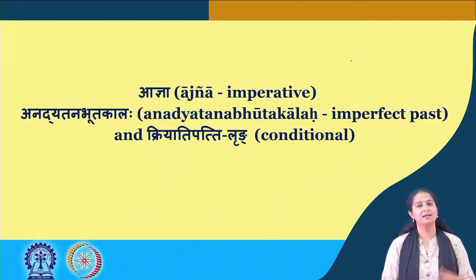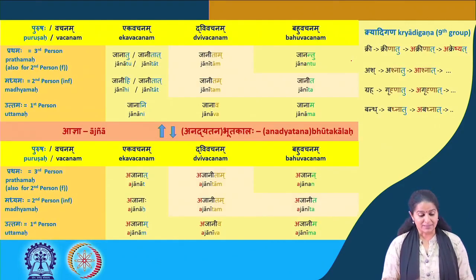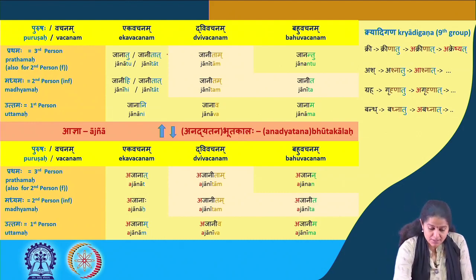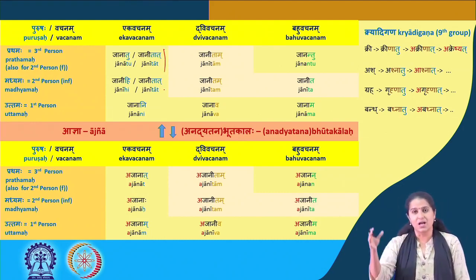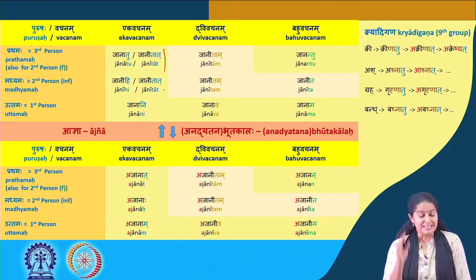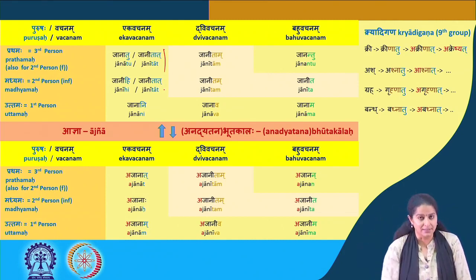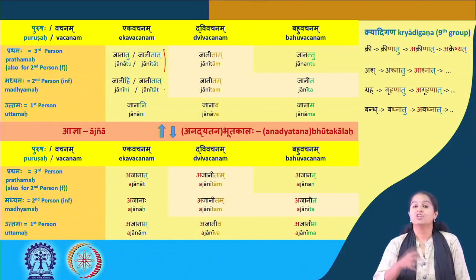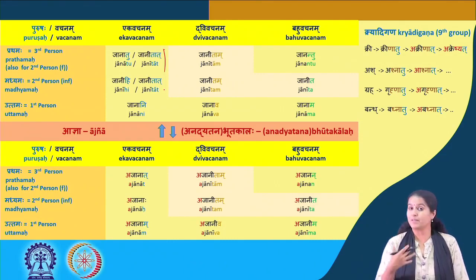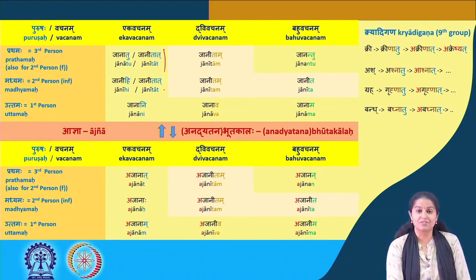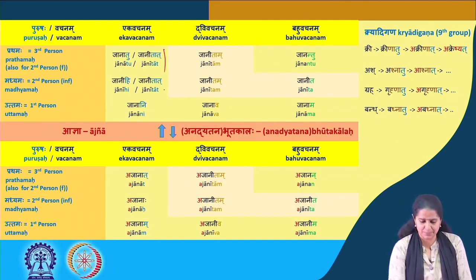Now we have the ajnya (imperative), the anadyatanam bhuta kala, and the kriyadatipatil. Jaanati becomes jaanatu or jaanitaat. We find this form again — the jaanitaat — across various verb groups: jaanitam, jaanantu. Jaanihi, jaanitaat; jaanitam and jaanita. Aham — jaanani, that is 'I should know'. Avam — jaanava (note: instead of jaaniva, it is jaanava — a tricky one) and jaanama.